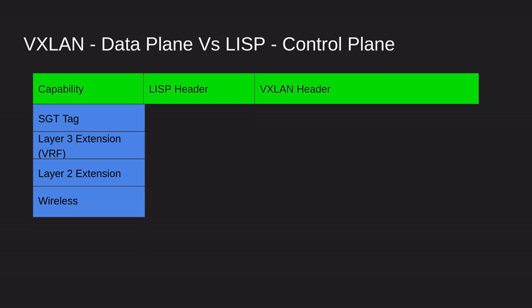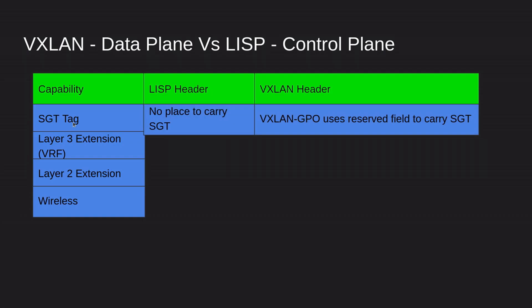Now let's compare the VXLAN data plane versus the LISP control plane by capability. First, regarding SGT: there is no place in the LISP header to carry the SGT tag. SGT is used for micro-segmentation in a network — for example, if you have an HR server and only want HR users to access it, you assign an SGT tag to that server. LISP is unable to carry SGT, but VXLAN has a reserved field specifically to carry that SGT tag.